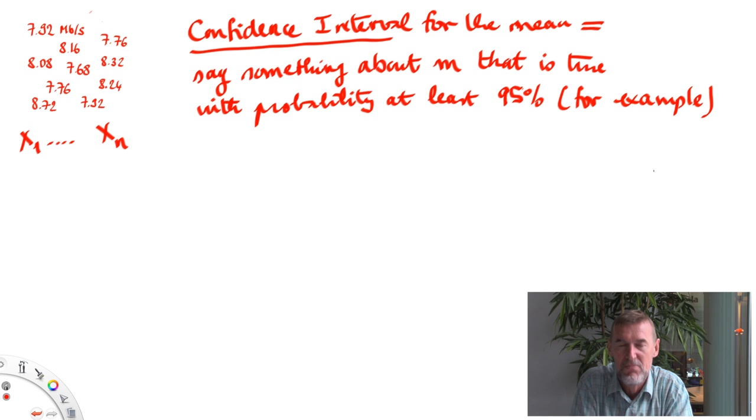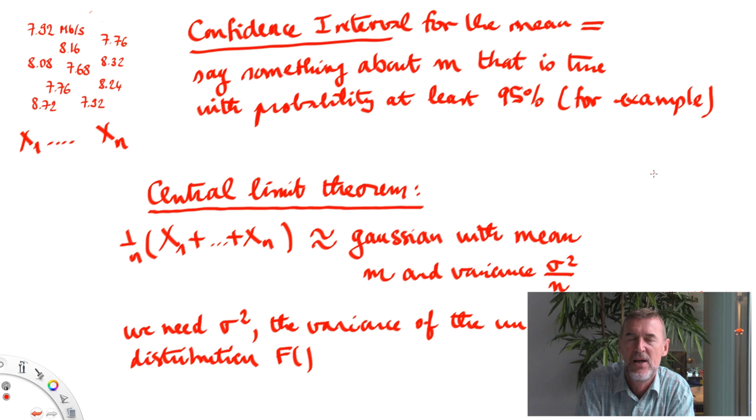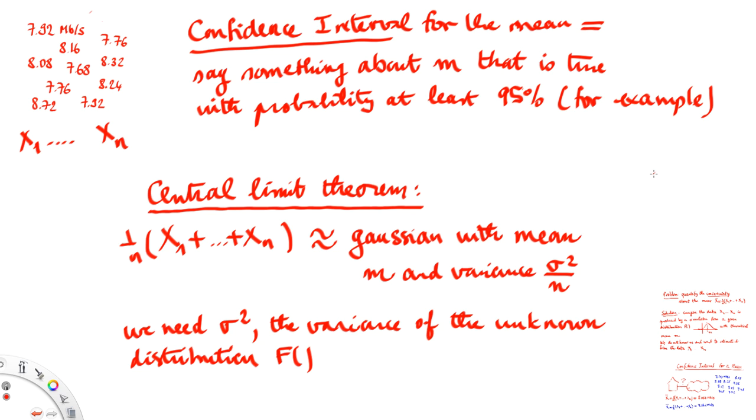So to obtain such a confidence interval for the mean, we use the central limit theorem. This is a theorem in probability that says that if you take the average of n independent samples drawn from some distribution, you have a random quantity that, when n is large, tends to be approximately distributed like a Gaussian random variable.